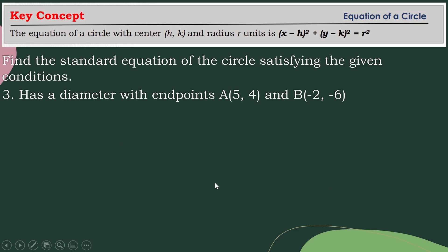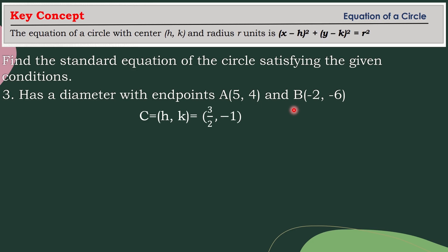We have already found the coordinates of the center of the circle. Now let's find the length of its radius. To find the radius, we are going to use the distance formula. We need to identify which points we are going to consider — definitely the coordinates of the center are part of the solution, and we're going to choose another point on the circle — either point A or point B. In this case, we are going to use point A.